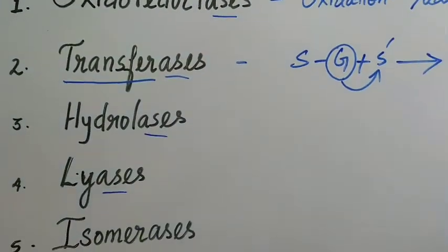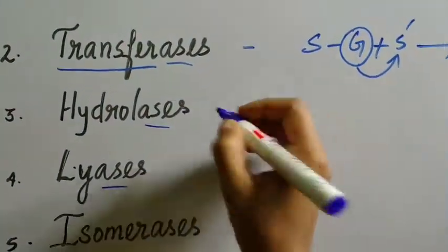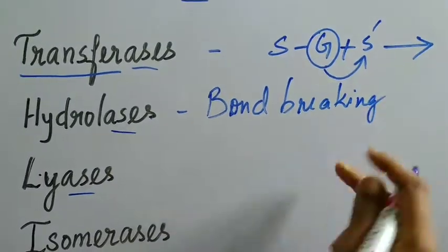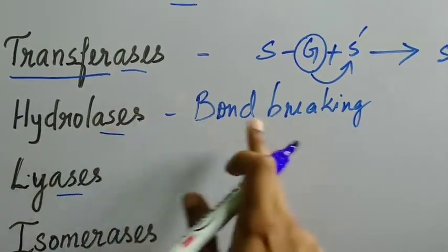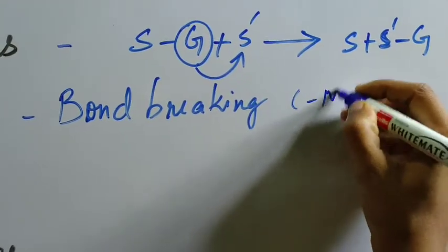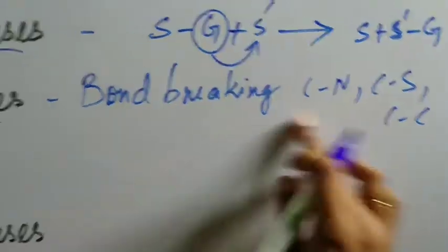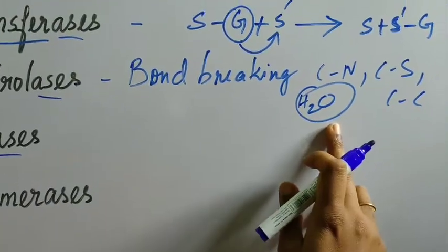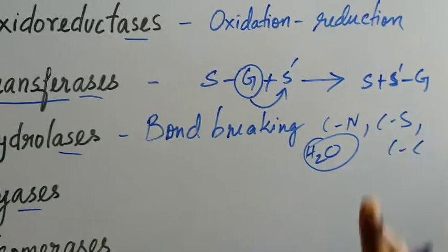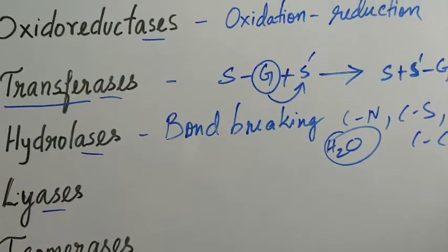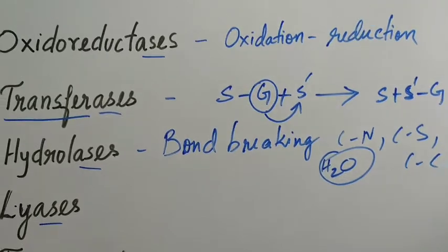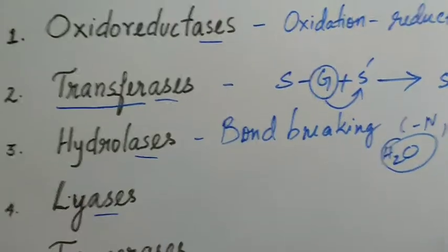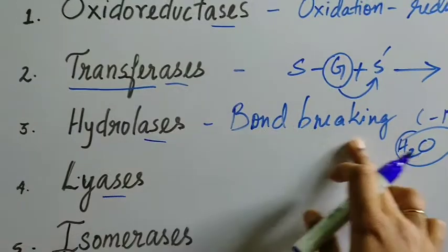Hydrolases — these are enzymes involved in bond-breaking reactions. Enzymes which take part in bond-breaking reactions — for example, C-N, C-S, C-C bonds are being broken by the introduction of water. By the introduction of water, these enzymes help in the breaking of bonds. Just recall what you learned previously — how glycosidic bonds, peptide bonds, and phosphodiester bonds are formed. Those kinds of enzymes are called hydrolases, taking part in bond-breaking by the introduction of water.